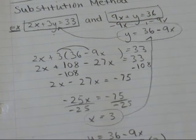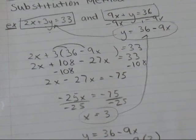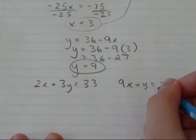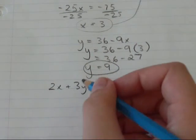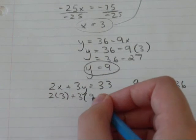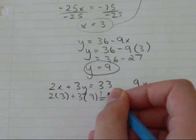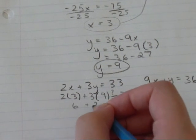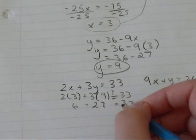So 2x plus 3y equals 33. 9x plus y equals 36. So x is 3. 2 times 3 plus 3 times y is 9. Does that equal 33? 2 times 3 is 6 plus 27. So it does equal 33. So I know that one's right.